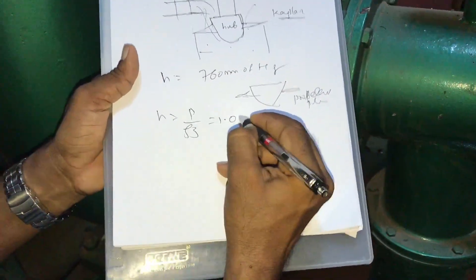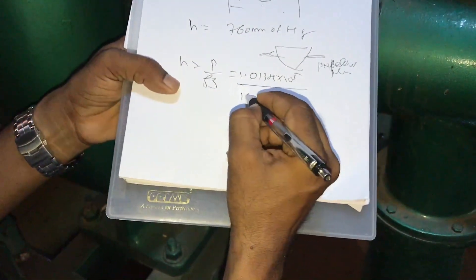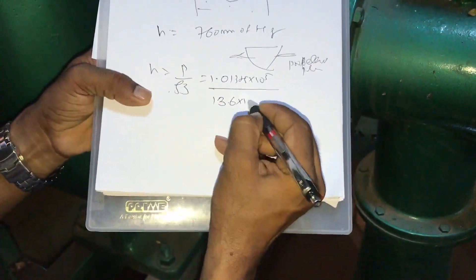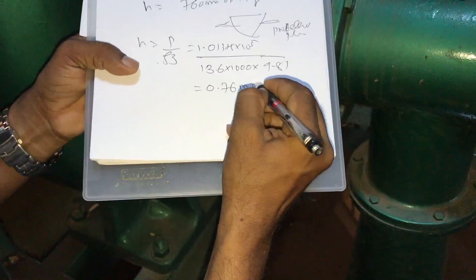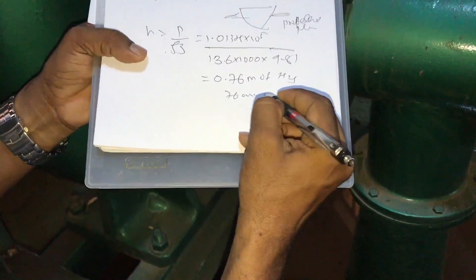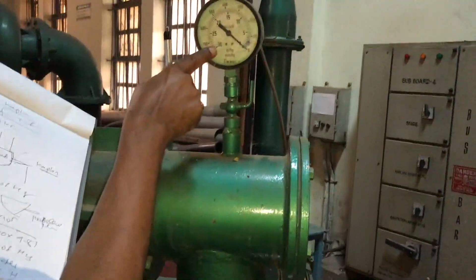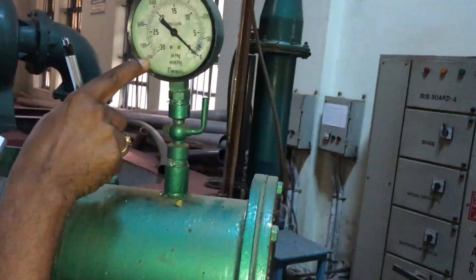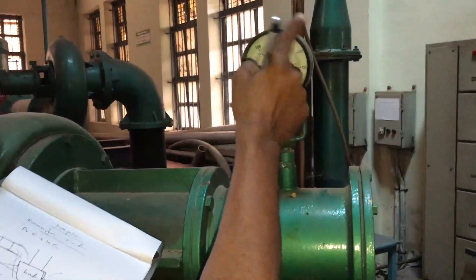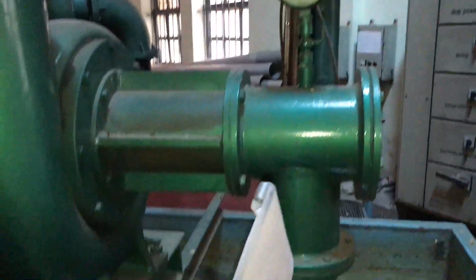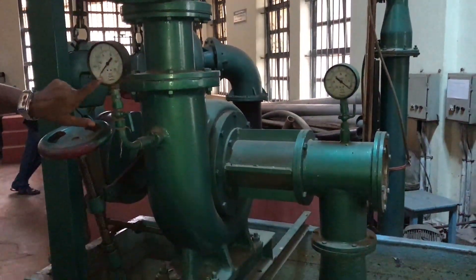The head h equals p divided by rho·g, where p is atmospheric pressure: 1.01325 × 10⁵ N/m². The density here uses the specific gravity of mercury multiplied by the density of water and g = 9.81, giving 0.76 meters of mercury, or 76 centimeters, or 760 mm of mercury. The scale goes from 0 up to 700, and 760 mm of mercury is the atmospheric head, so the pressure here is less than 760. There is also a pressure gauge reading in kg per cm² and lb per square inch; we need kg per cm².